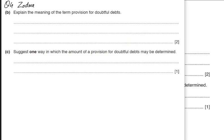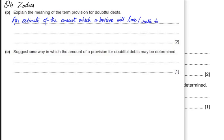Explain the meaning of the term provision for doubtful debt: it is basically the estimate of bad debts that can be incurred in the future — the irrecoverable debts that are going to happen in the future. We need to record it immediately. It is an estimate of the amount which a business will lose. We haven't lost this amount yet, but there is a doubt it can turn bad in the future.